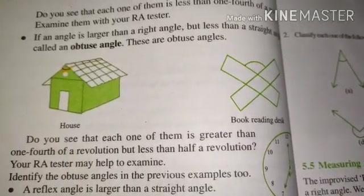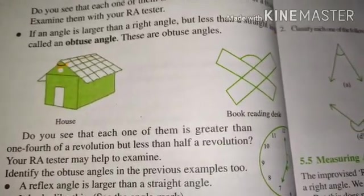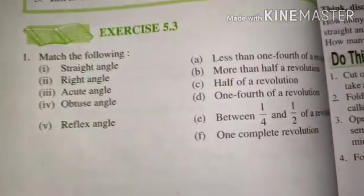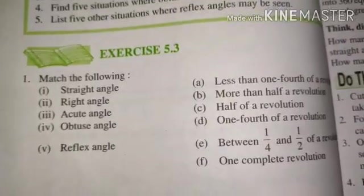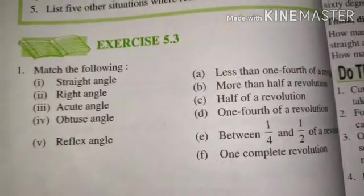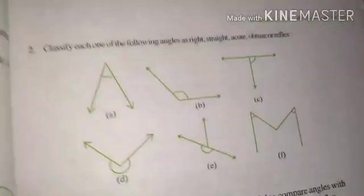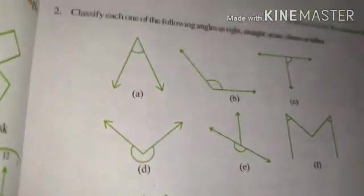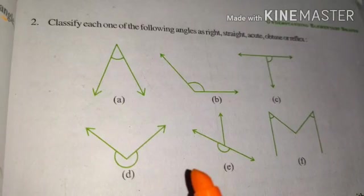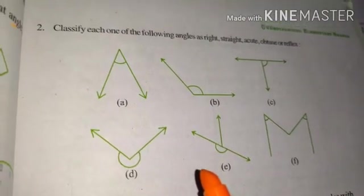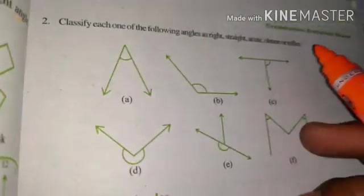Okay, if we talk about the revolution, then it will be a little change. So in your book, you have a matching. If you look at the 5.3, match the following. Matching you will try. Question number 2 is very simple. First one is, classify each of the following. Write as right angle, straight angle, acute angle, obtuse or reflex.